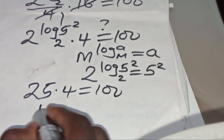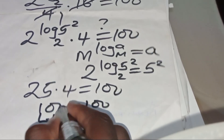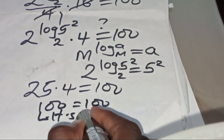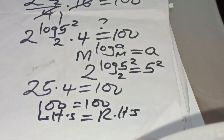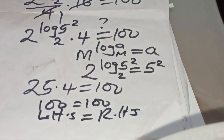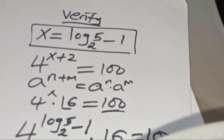So 25 times 4 equals 100, and that means the left-hand side is equal to the right-hand side. That basically affirms that the value of x, which is log base 2 of 5 minus 1, actually satisfies the equation. Kindly follow the steps, like this video, and subscribe.